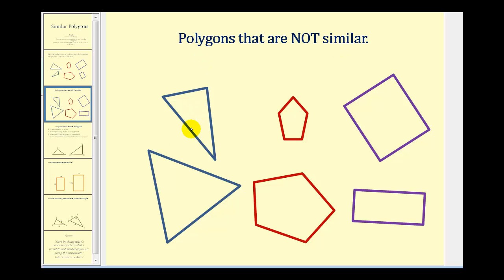These two triangles are not similar because they're not the same shape, and obviously not the same size. Same thing with these two pentagons and these two rectangles — they're not the same shape, therefore they are not similar.